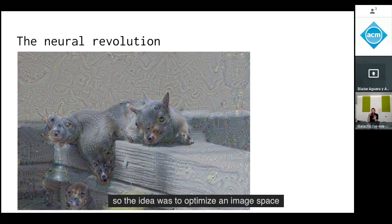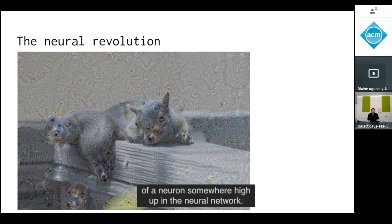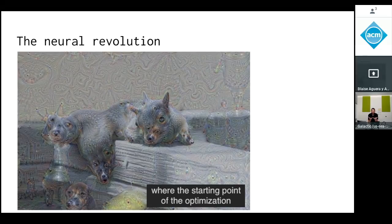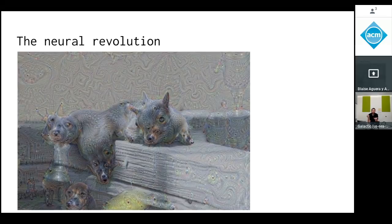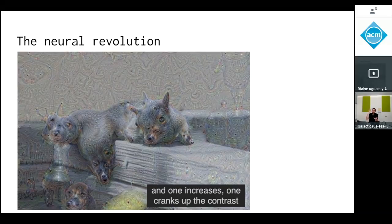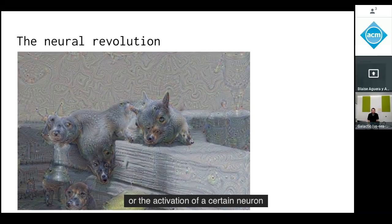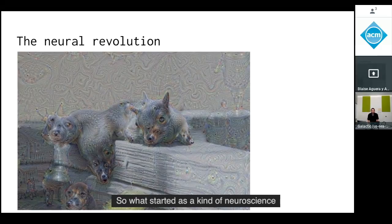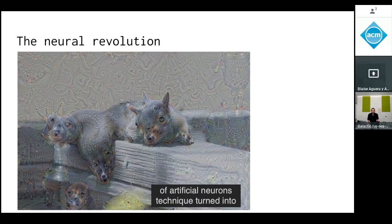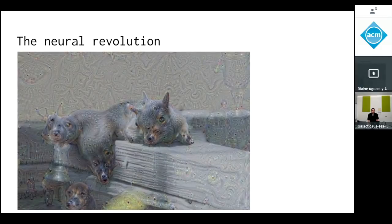The idea was to optimize in image space to maximize the activation of a neuron high up in the neural network. Deep Dream was the realization of that idea, where the starting point is an existing image and one cranks up the activation of a certain neuron to see what that thing is responding to. What started as a neuroscience-of-artificial-neurons technique turned into a trippy art project.